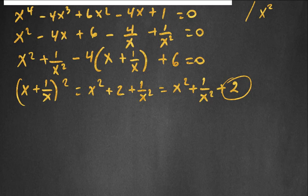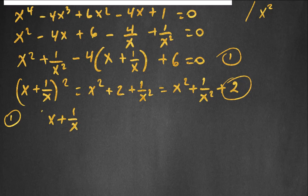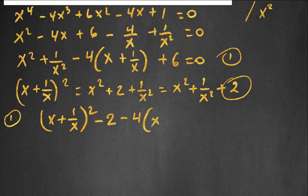So noting that 2 is the difference, if we rewrite the equation, we can say x squared plus 1 over x squared is equal to x plus 1 over x, all squared, minus 2. So the equation becomes x plus 1 over x, squared, minus 2, minus 4 times x plus 1 over x, plus 6 is equal to 0.